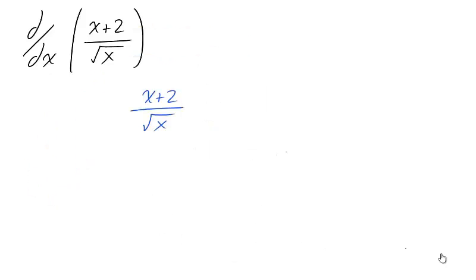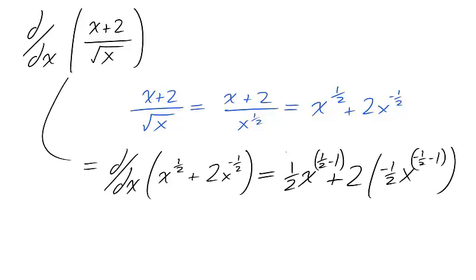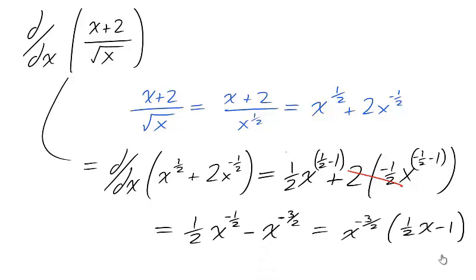Alternatively, we could have rewritten our expression before we took our derivative. By rewriting the square root of x as x to the 1 half, and then performing the division operation, we have an expression for which we don't need the quotient rule. Due to the summation rule, we can use the power rule on both pieces, use arithmetic to clean up a bit.